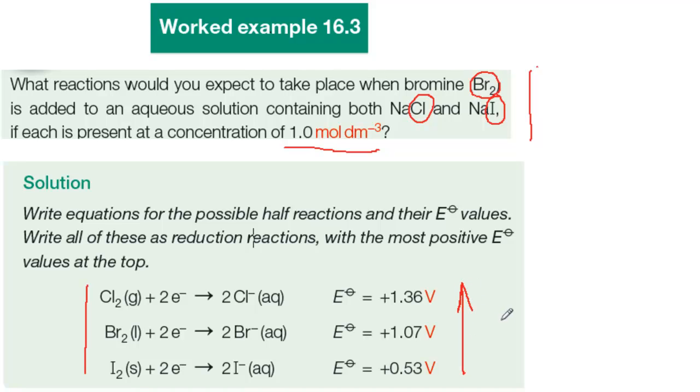There's a fuller list on page 738. When you see a list like this, check that it has the most positive value at the top, because occasionally it's written the other way round.